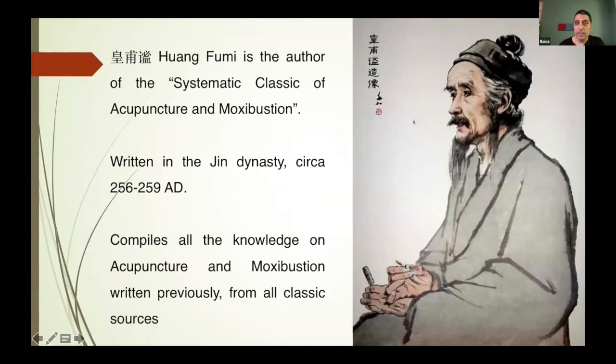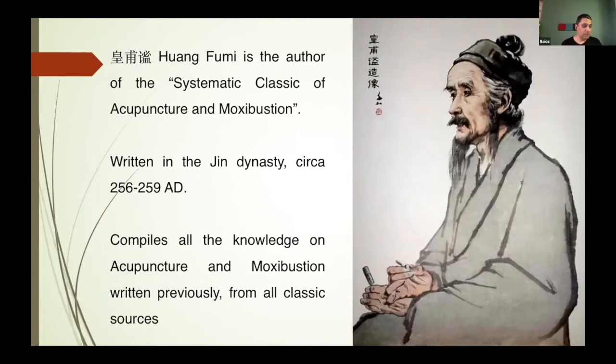This is actually considered to be the first classic of acupuncture and moxibustion. It was written by this scholar — Huang Fumi — whose portrait you can see in the image, although nobody is very sure how he looks. His name is Huang Fumi, and he is believed to have written the Systematic Classic in the third century AD, between 256 and 259, which makes it approximately 1,800 years ago.